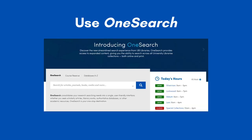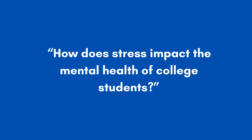To find scholarly articles, you will use the UB Libraries OneSearch. Just like in Google, all you have to do is put in your keywords in the search box and then select the information that makes the most sense to your topic. For this video, we will use the example research question: How Does Stress Impact the Mental Health of College Students? Before you search, make sure you identify the main keywords of your research question.